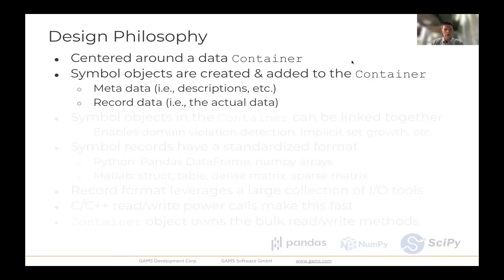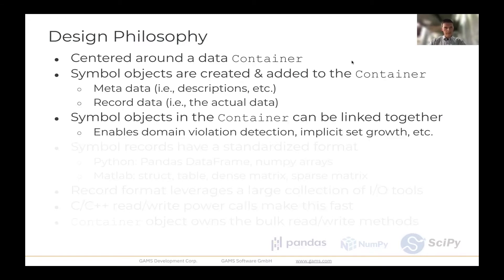Symbol objects are then created and added to the container. So a symbol object contains both metadata as well as the actual record data. The nice thing about this object-oriented structure is that symbol objects in the container can all be linked together through domain information.